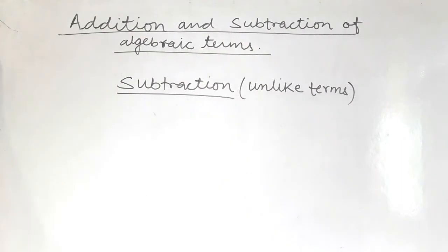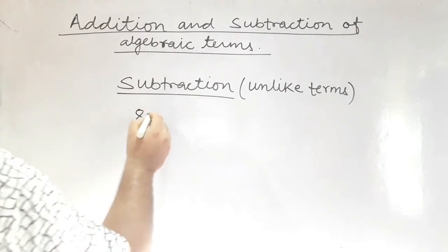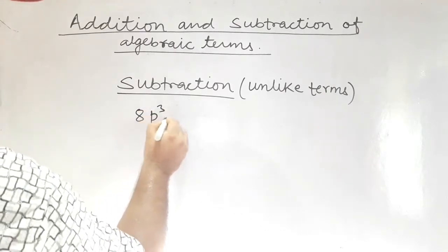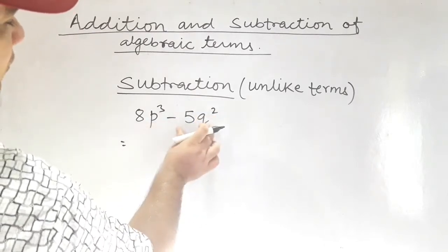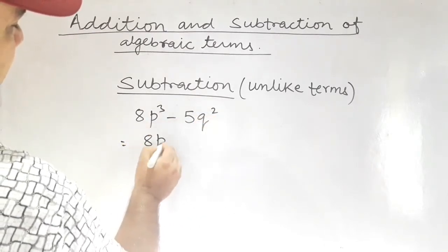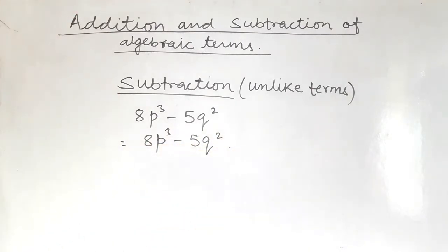Subtraction of unlike terms. As we have studied, unlike terms can never be added. Likewise, unlike terms also cannot be subtracted. For example, 8p cubed minus 5q squared — these two are unlike terms, so they are written as they are. Because unlike terms can never be added and they can never be subtracted, we have to write them as they are.